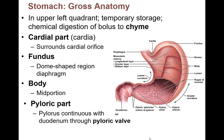Chyme generally doesn't really look like your recognizable food anymore. It's further broken down — we've got acid mixing in, lots of churning — it's kind of this liquidy food now. We call that chyme. Bolus still kind of looks like your food, but by the time we call it chyme in your stomach, it doesn't really look as recognizable as when you ate it.